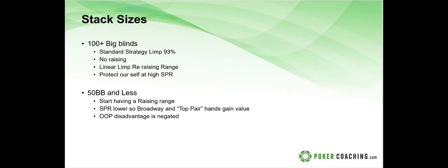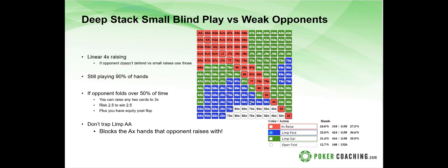Simon asks if this strategy works at micro stakes — yes. Use the weak opponent strategy: raise your top 25 percent of hands in red, limp the green hands, and limp fold the blue hands when the opponent raises. That's your micro stakes strategy. Thanks everyone — I'll send out dates for next month's webinars on my Twitter at McMattoPOKER. Tweet me topic suggestions for next month's webinar.